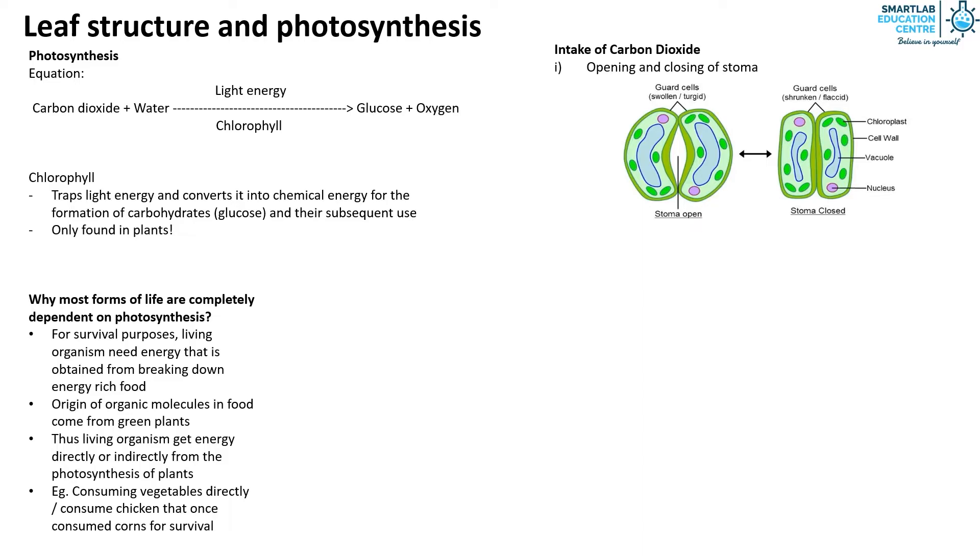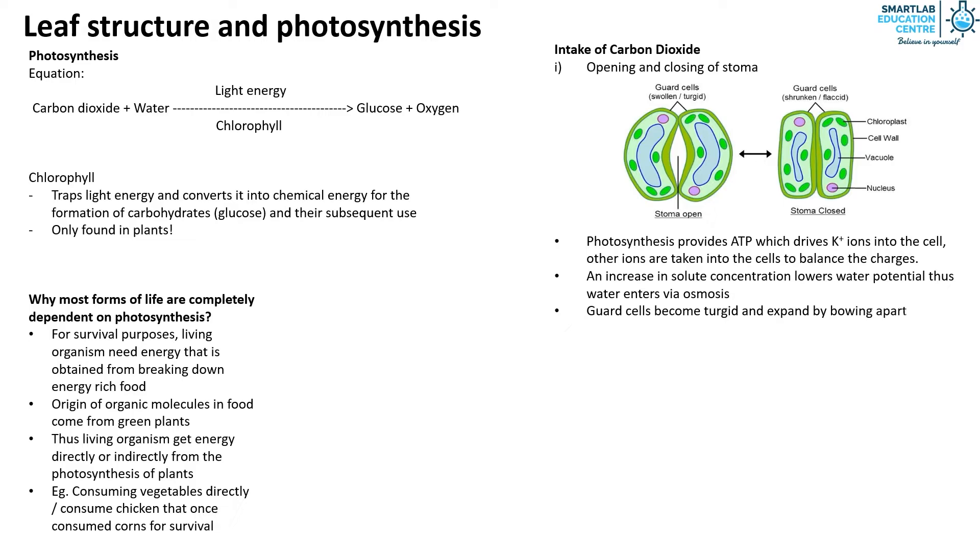Well, during photosynthesis it provides energy in the form of ATP which drives potassium ions into the guard cells and other ions are taken in as well to balance the charges. This causes an increase in solute concentration in the guard cells which lowers their water potential. Thus water enters the guard cells via osmosis. When water enters the guard cells, the guard cells become turgid and expand by bowing apart, creating a hole between them. Thus in daylight when photosynthesis occurs, the turgid guard cells cause the stomata to open so that carbon dioxide can enter the leaf for photosynthesis.